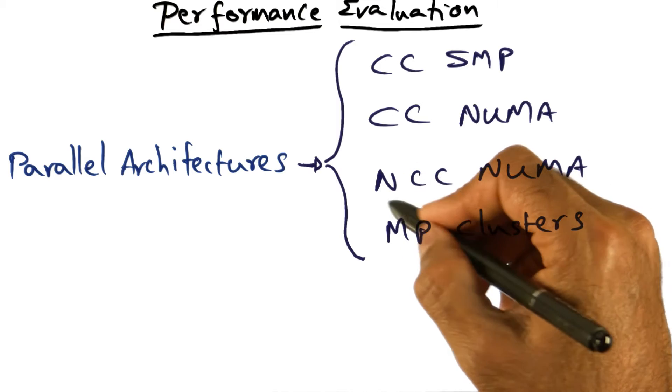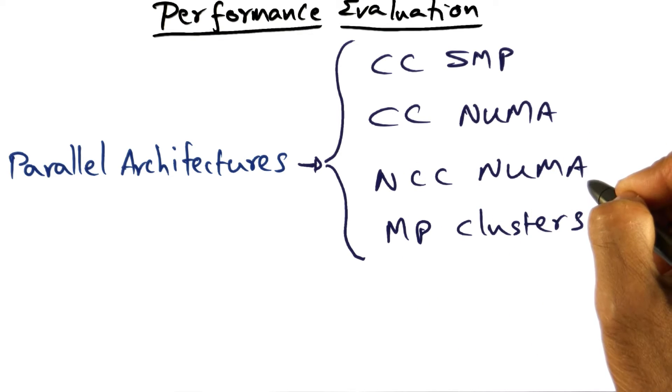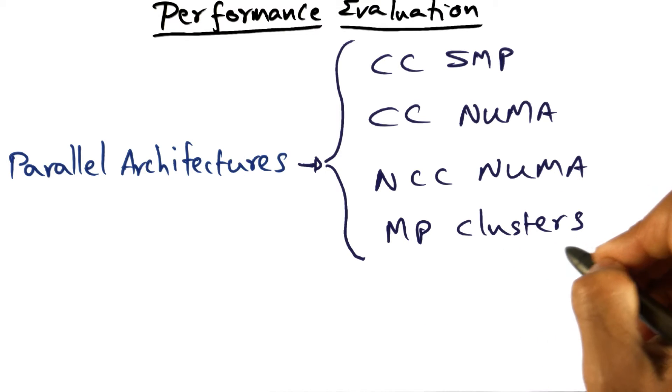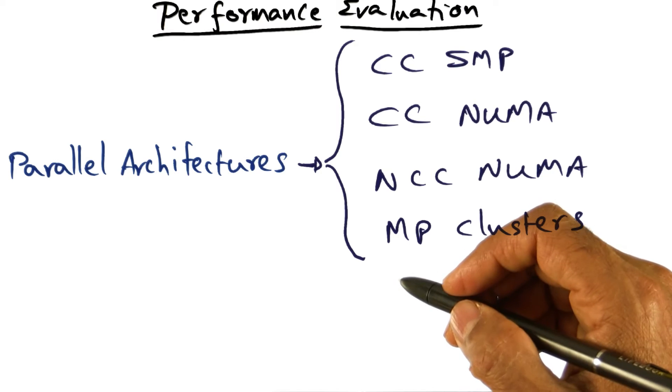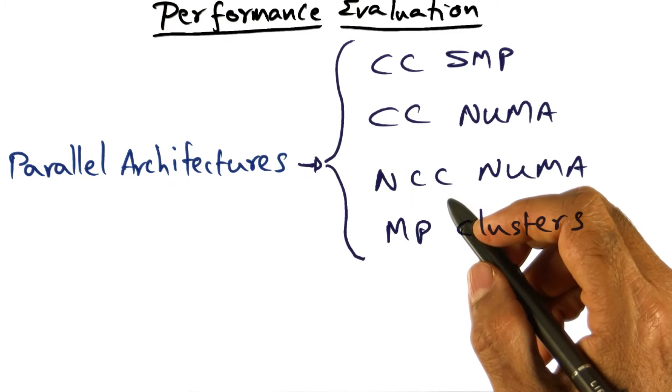And you can also have non-cache coherent shared memory multiprocessor. And of course, the last thing I mentioned to you is the message passing clusters. So these are the different flavors of architectures that parallel machines can be built today.